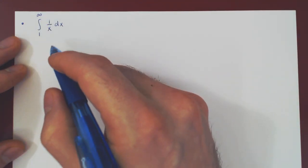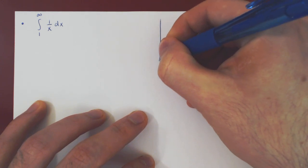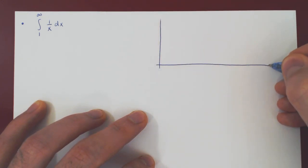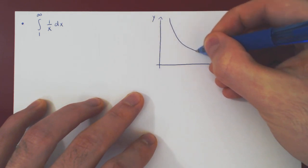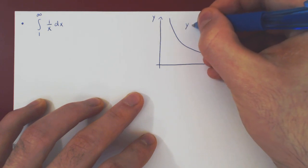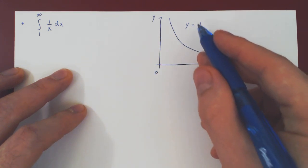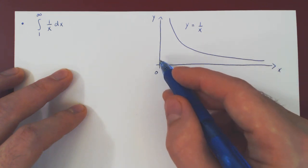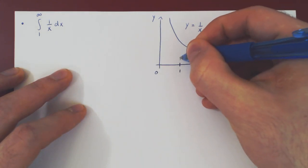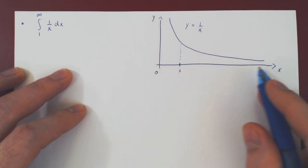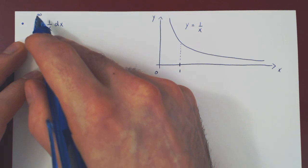Let's first look at the geometric meaning of this. If we sketch the function 1 over x from 1 to infinity, this is clearly an improper integral of type 1. The function 1 over x on the positive real line has a discontinuity at x equals 0, but we're starting at 1. Starting at 1 and beyond, 1 over x is clearly continuous, but the interval of integration is infinite — we go from 1 all the way up to infinity.